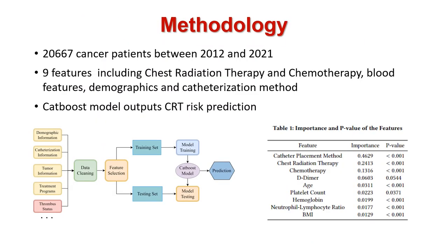First, we collected data from 20,667 cancer patients. After data cleaning and feature selection, we obtained nine features including chest radiation therapy and chemotherapy, blood features, demographics, and catheterization method. We chose the CatBoost model to predict CRT risk.